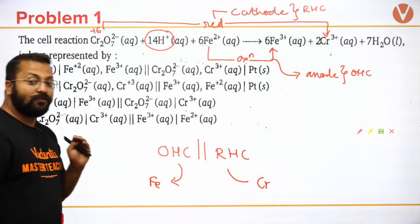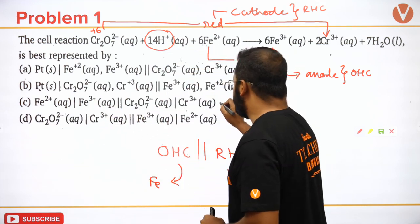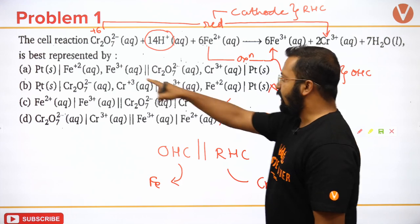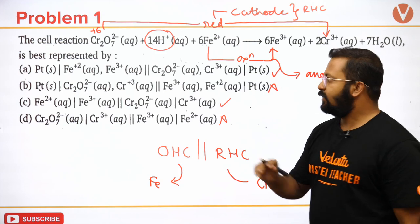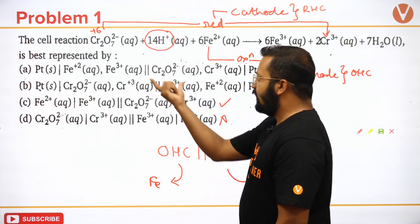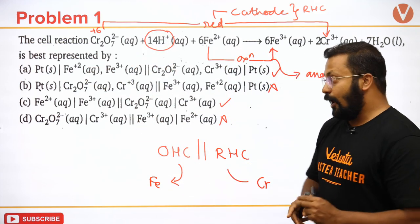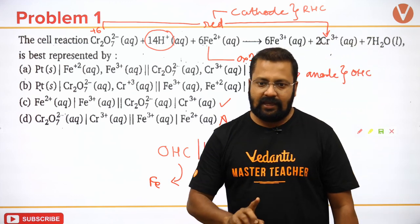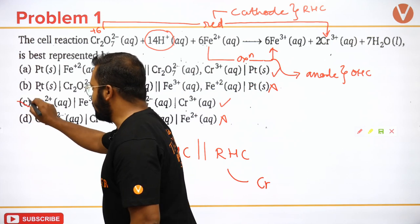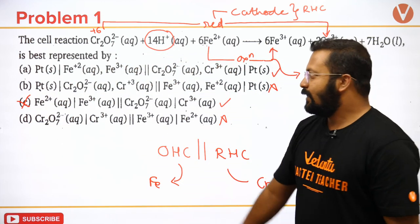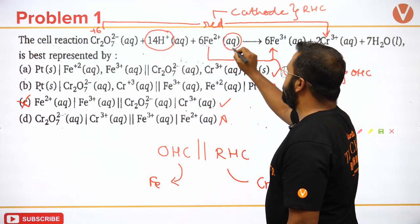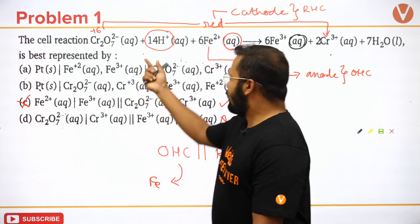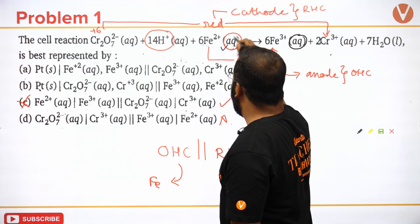In which of the options is iron on the left hand side? Options C and A both have iron on the left. Most of you have answered C, but C is incorrect. Look carefully: Fe²⁺ is in the aqueous phase and Fe³⁺ is also aqueous. When both species are in the same aqueous phase, I do not put a vertical line — I put a comma instead.